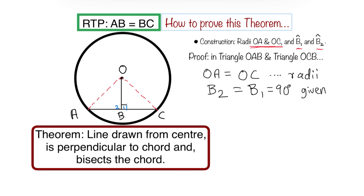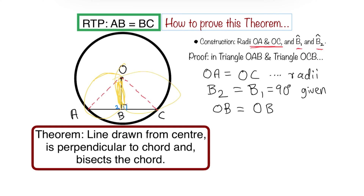Then I'm going to say line OB equals line OB. This line exists in triangle OAB and also in triangle OCB. The line OB in this triangle equals OB in this triangle. The reason is: common. The line is common to both triangles.